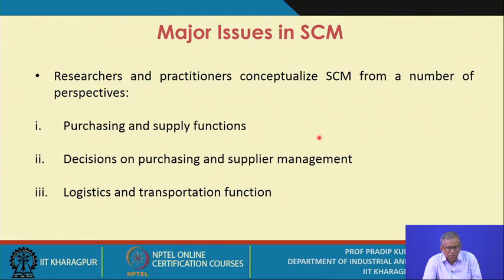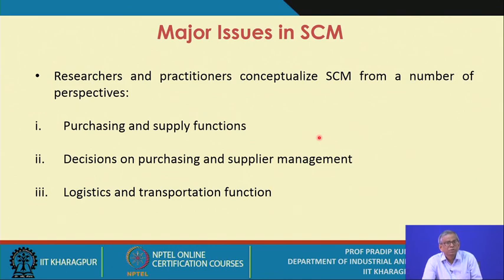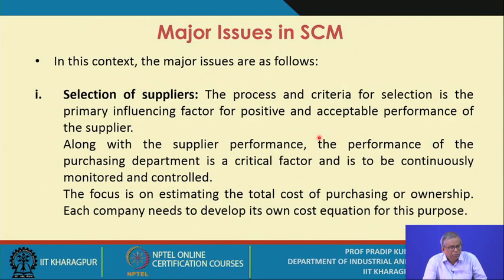The second important issue is the decisions on purchasing and supplier management. While you try to have an appropriate supply chain management for your organization, many kinds of decisions on purchasing and supplier management you need to take, and these decisions may become very crucial. The third perspective is logistics and transportation function.